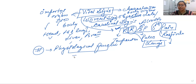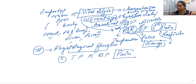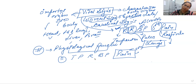When we look at the sequence, number one is TPR, then blood pressure, and then pain. Pain is actually the fifth vital sign. After pain, we give the second preference to pupil dilation.